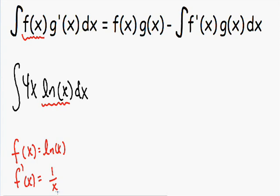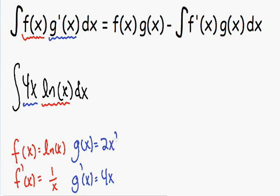And now the next thing we want to do is pick our g prime of x. Notice in our formula how we have g prime of x. Well, if we already picked the natural log to be f of x, now we know that g prime has to be the 4x. So our g prime of x is equal to 4x, and we can use this information to find g of x. We can take the integral of g prime to get our function g of x. And the integral of 4x is 4x squared over 2, or you could say 2x squared.